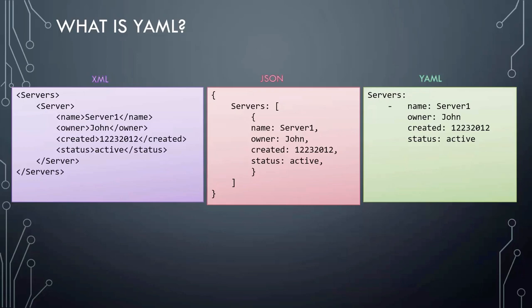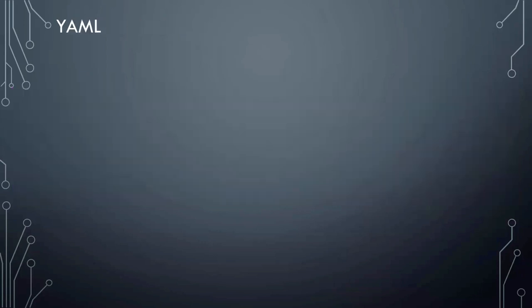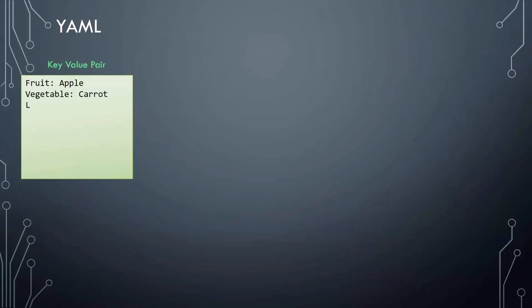Here is a quick comparison of sample data in three different formats. The one on the left is XML where we display a list of servers and their information. The same data is represented in JSON format in the middle and finally in YAML format to the right. Take a minute to compare the three formats. Let's take a close look at YAML. If you take the data in its simplest form such as key value pairs, this is how you would define it in YAML.